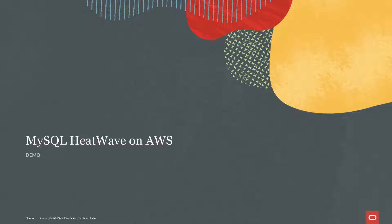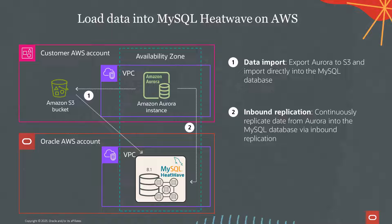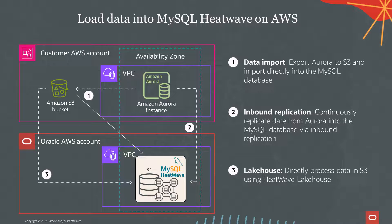In this video, I will show you three ways to load data into MySQL HeatWave on AWS. The first way is to import an Amazon Aurora dump from Amazon S3. The second way is to set up continuous replication from Amazon Aurora. And the third way is to load data files from S3 with HeatWave Lakehouse.